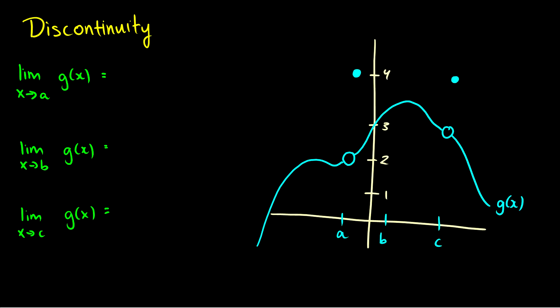But what about when a graph is discontinuous? Here I have a function g(x) with two gaps — a gap at a and a gap at c — but it's also defined at a and c. If we take g(a), it happens to equal 4, and if we take g(c), it also equals 4. So this is a case where there's a discontinuity and the defined point is somewhere else. How does this affect the limit?